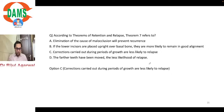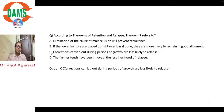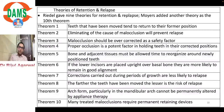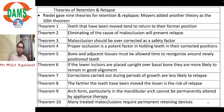According to Riedel's theorems of retention, theorem 7 refers to: corrections carried out during the period of growth are less likely to relapse. There are 9 theorems in total by Riedel; the 10th was added by Moyers.